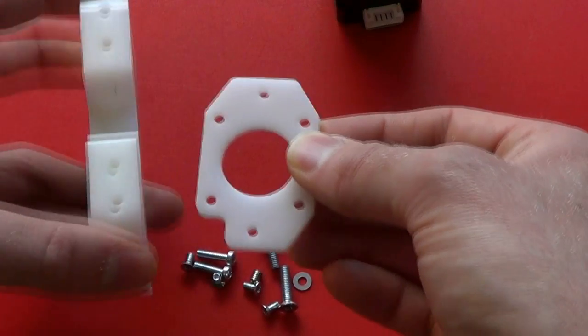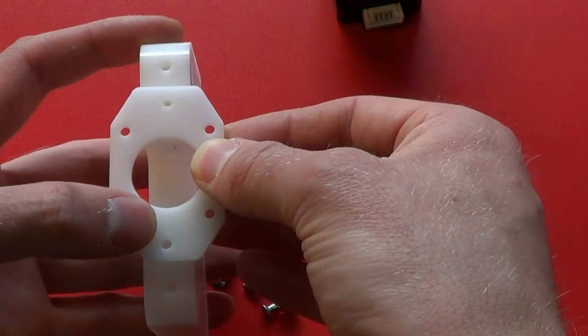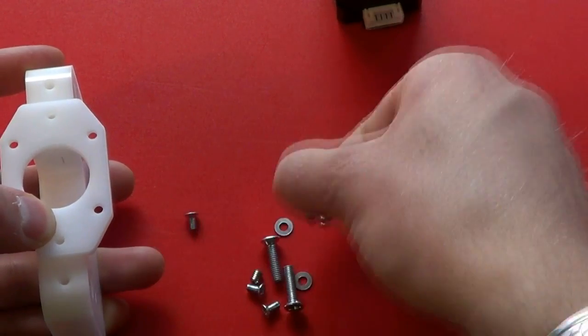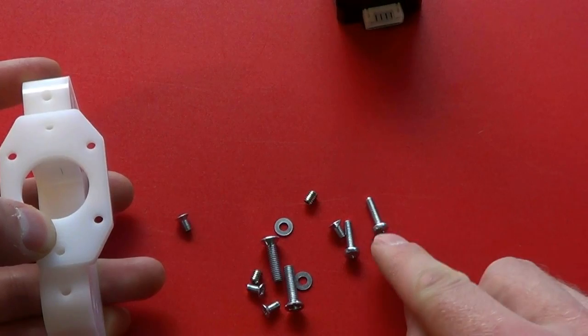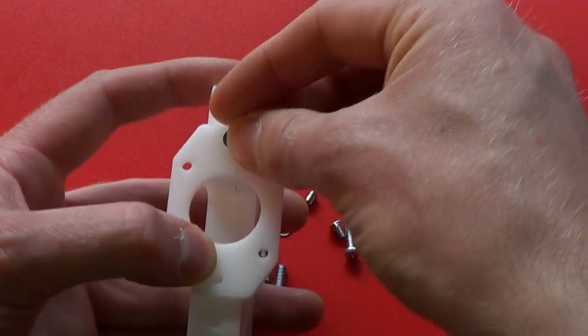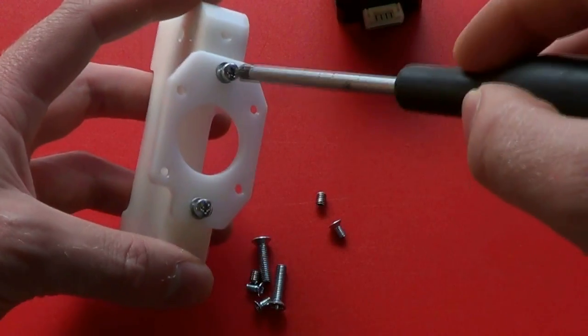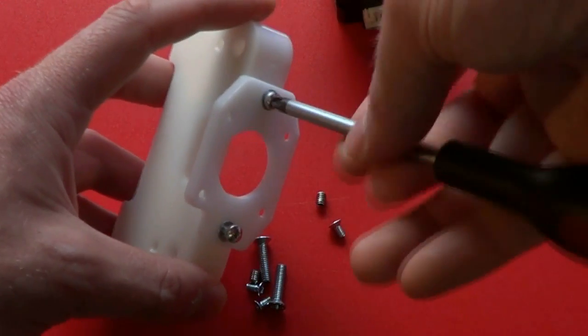Place the motor mounting plate on top of the X support and secure it using the 12mm long M3 screws plus washers. Use the posi drive number one screwdriver to tighten them.